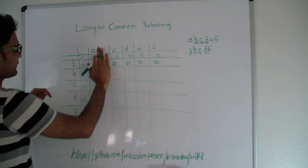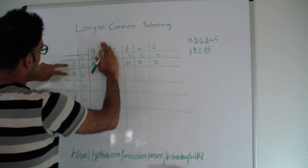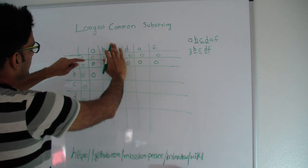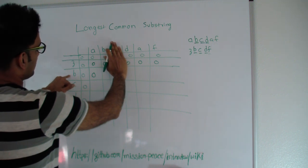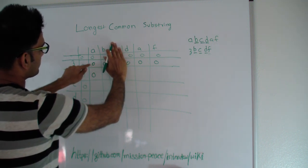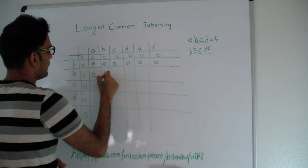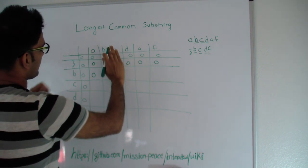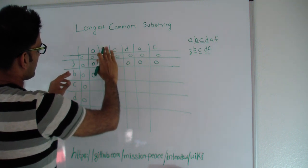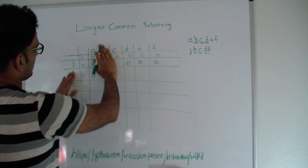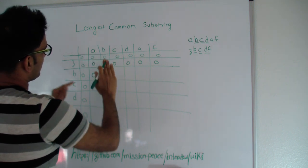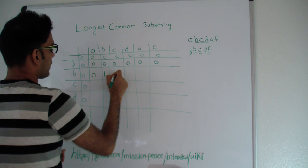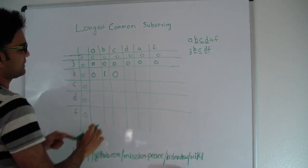Now let's include B. If you had string A on one side and Z and B on the other side, the longest common substring again would be 0. Since B and B are the same, the longest common substring will be 1 plus whatever is diagonally across, so 1. This means we had string A, B and string Z, B — since B and B are same, the longest common substring is 1 plus the longest common substring between Z and A, which is 0. So 1 plus 0 is 1. If the characters are not the same, we just put 0.